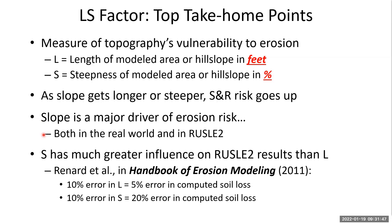Slope in particular is a major driver of erosion risk in the real world and in RUSLE2. If it's steeper we're going to have more transport energy. Even if the main detaching agent on these side slopes is raindrop impact, the steeper it is, the much greater likelihood that what's been detached by raindrops is going to get moved. In fact, slope has much greater influence on RUSLE2 results than slope length.